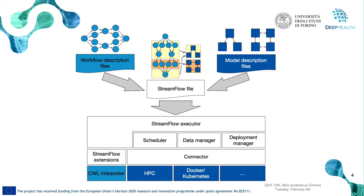This is a graphical representation of the Streamflow logical stack. As we can see in the upper part of the picture, the input of a Streamflow execution consists of three main elements. First, we have a workflow description realized using the standard CWL format. Then we have one or more model description files, which can be HPC-oriented scripts such as SLURM or PBS scripts, Docker Compose files, Kubernetes Helm charts, and so on. Finally, we have the Streamflow file, which binds each step or group of steps of a workflow to the desired execution environment described in a model description file.